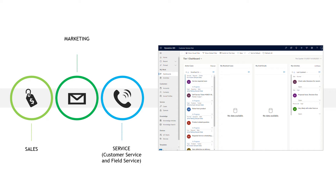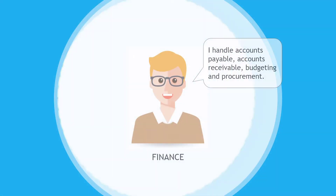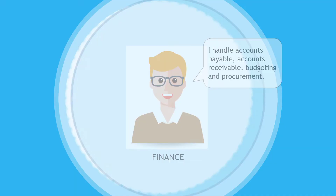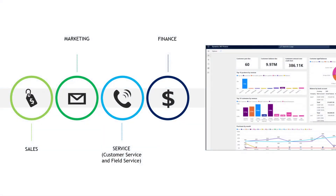So you've sold stuff, you've serviced stuff, and you've got happy customers. Now let's make sure things are good inside TTT Manufacturing as well. That's going to include money — collecting money from customers, paying the company's bills. Someone in the finance department handles things like accounts payable, accounts receivable, budgeting, procurement, contracts, and that sort of thing. There's an app for that as well, called Finance.